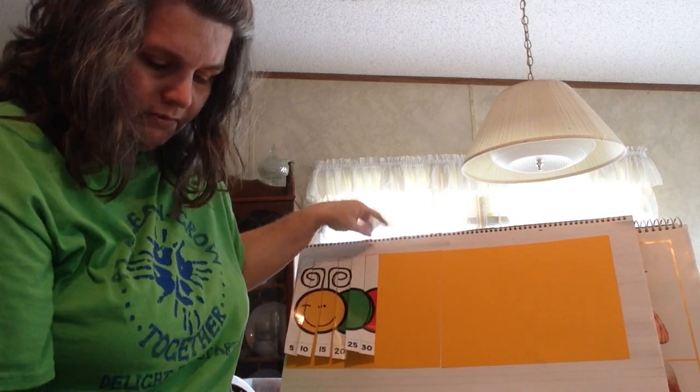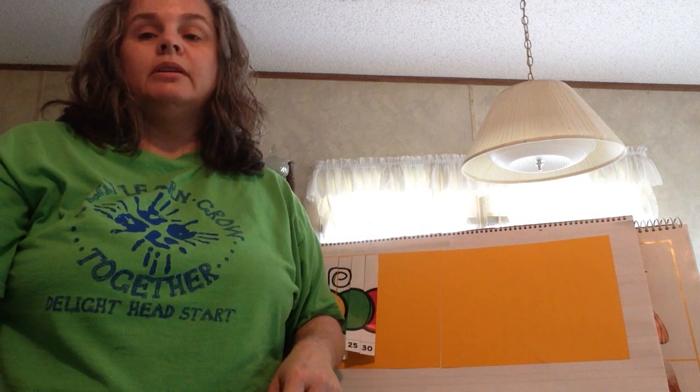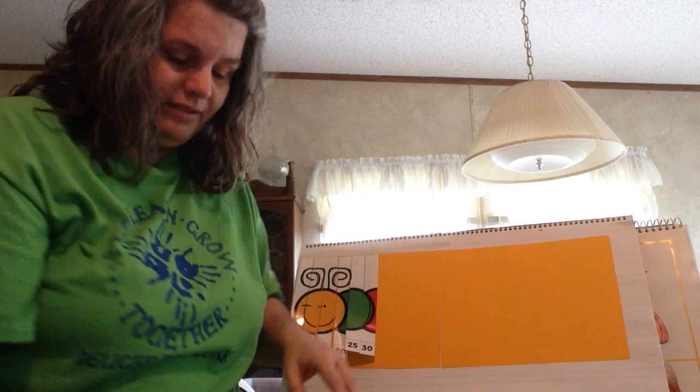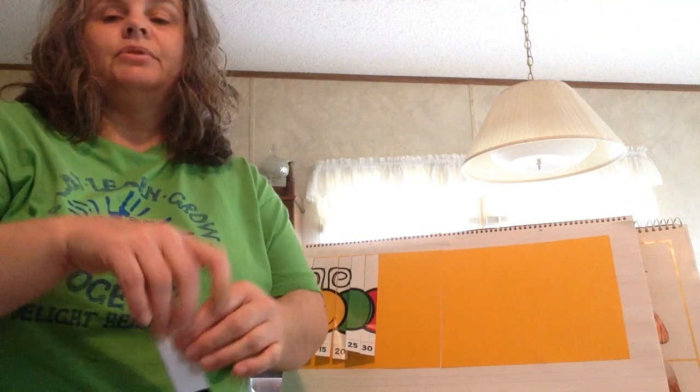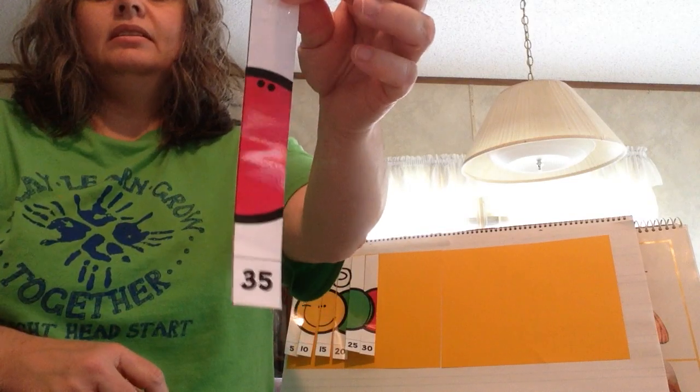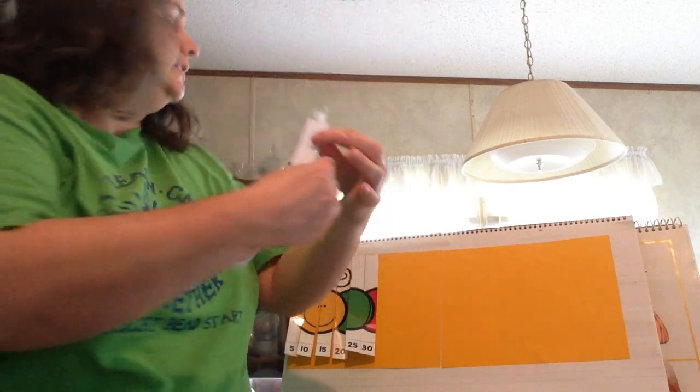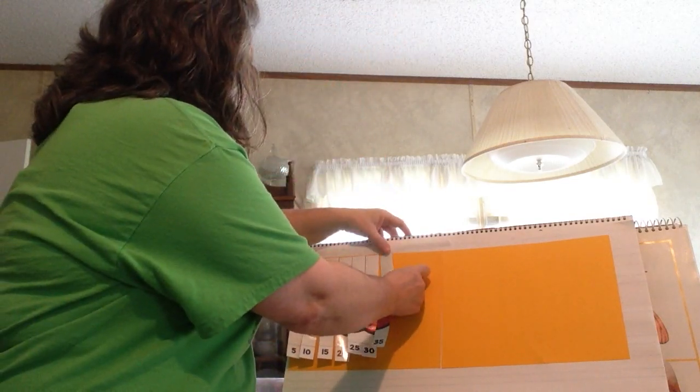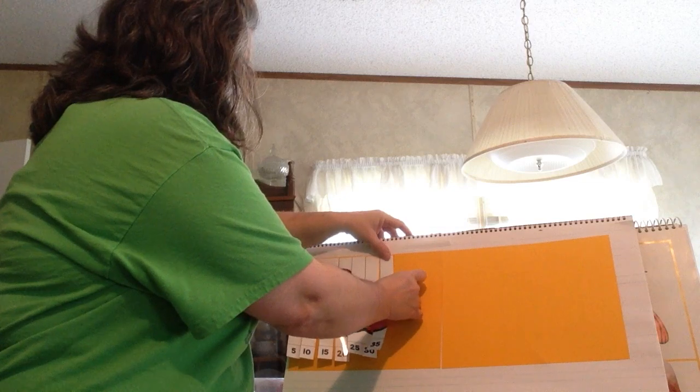From 30, you have 30, 31, 32, 33, 34, and 35. The next number is 35, and you put it right beside the 30.